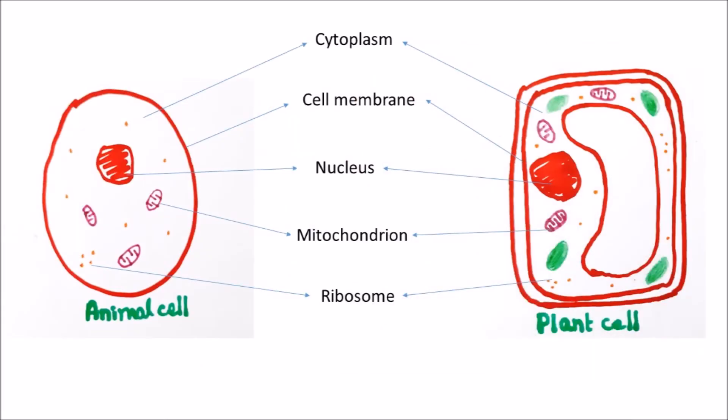The next is a plant cell. If you see the previous picture, you'll find a few similarities between the two cells: a nucleus, cell membrane, cytoplasm, ribosomes, and mitochondrion.